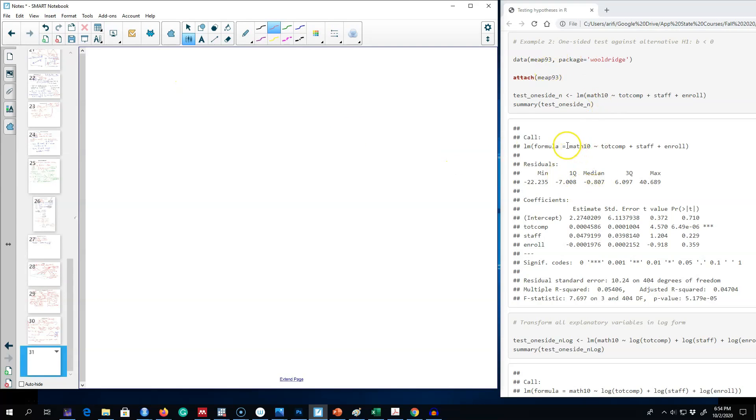We're going to use this dataset MEEP 93, and I have already run a regression. This is our Y variable, math 10, which is showing the school performance based on three variables. This variable total compensation shows the compensation which is paid to teachers, and this is staff salaries.